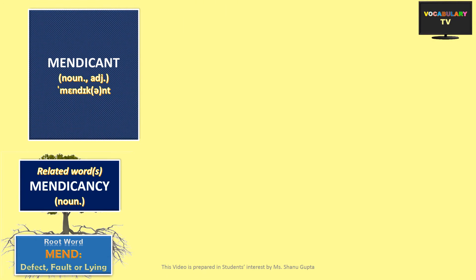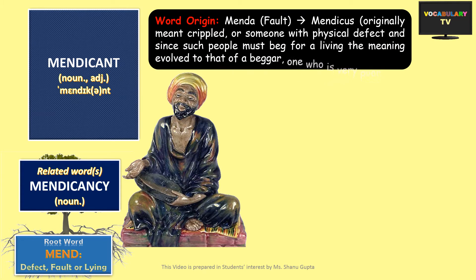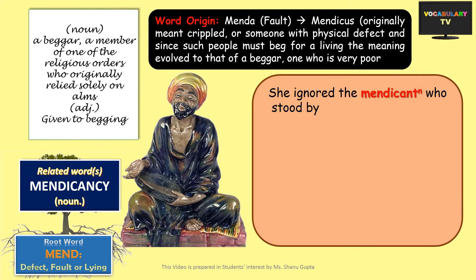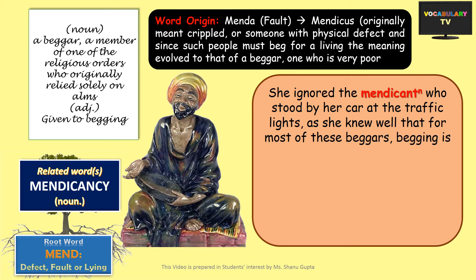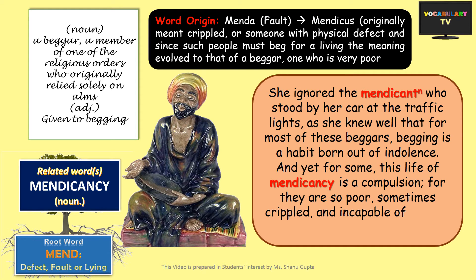The next word is 'mendicant,' which means a beggar. The word originated from 'menda,' meaning fault or defect, to 'mendicus,' which originally meant crippled or someone with a physical defect. Since these people must beg for a living, the meaning evolved to that of a beggar — one who is very poor. For example: she ignored the mendicant who stood by her car at the traffic lights, knowing that for most beggars this is a habit born out of indolence. And yet for some, this life of mendicancy is a compulsion, for they are so poor — sometimes crippled — and incapable of earning their livelihood.